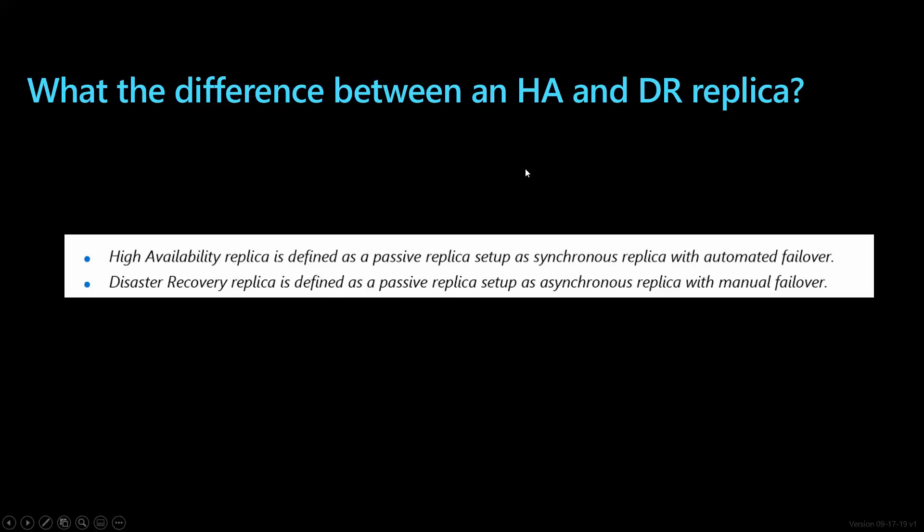The difference between HA and DR gets a little technical, but it's in the guide. A high availability replica is defined as a synchronous replica. In always on availability groups, HA typically has a synchronous replica — a hot standby in the same data center. The database won't continue unless it can commit to both. You have a transaction to your primary and your passive replica both acknowledge before it carries on. For DR, you set it up asynchronously because of the geographic distance between data centers — you don't want a network blip affecting your primary.